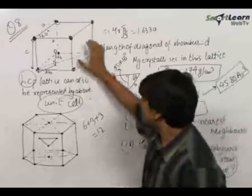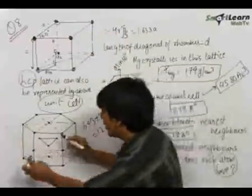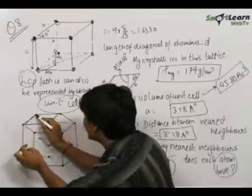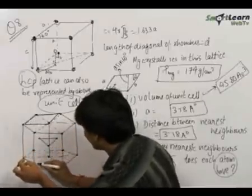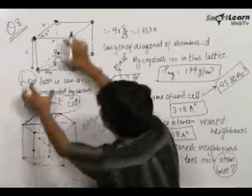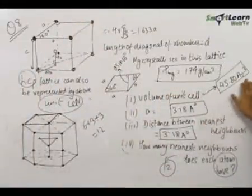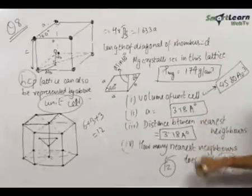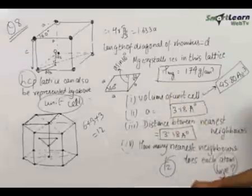One more thing to note is that this unit cell is simply a part of the standard HCP unit cell — it is a portion that has been cut to form a valid unit cell again. Our final answers are: volume of the unit cell = 45.80 Å³, unit cell length A = 3.18 Å, distance between nearest neighbours = 3.18 Å, and coordination number = 12.